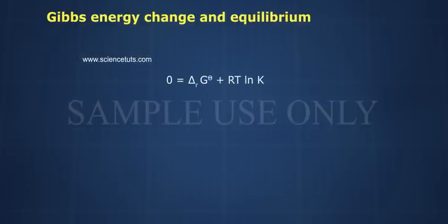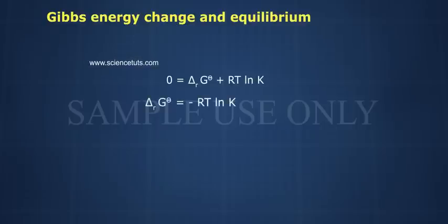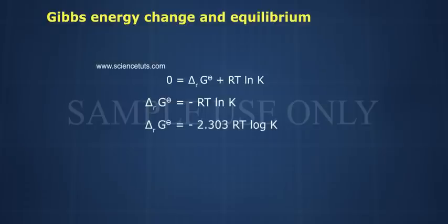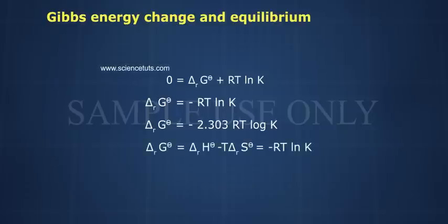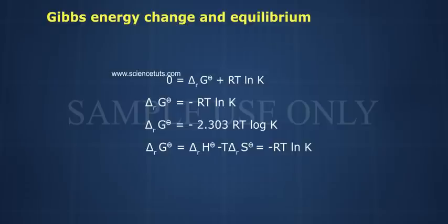Gibbs Energy ΔRG° is related to the equilibrium constant as follows: zero equals ΔRG° plus RT lnK, therefore ΔRG° equals minus RT lnK, or equivalently ΔRG° equals minus 2.303 RT log K. Also, ΔRG° equals ΔRH° minus T·ΔRS°, which equals minus RT lnK.